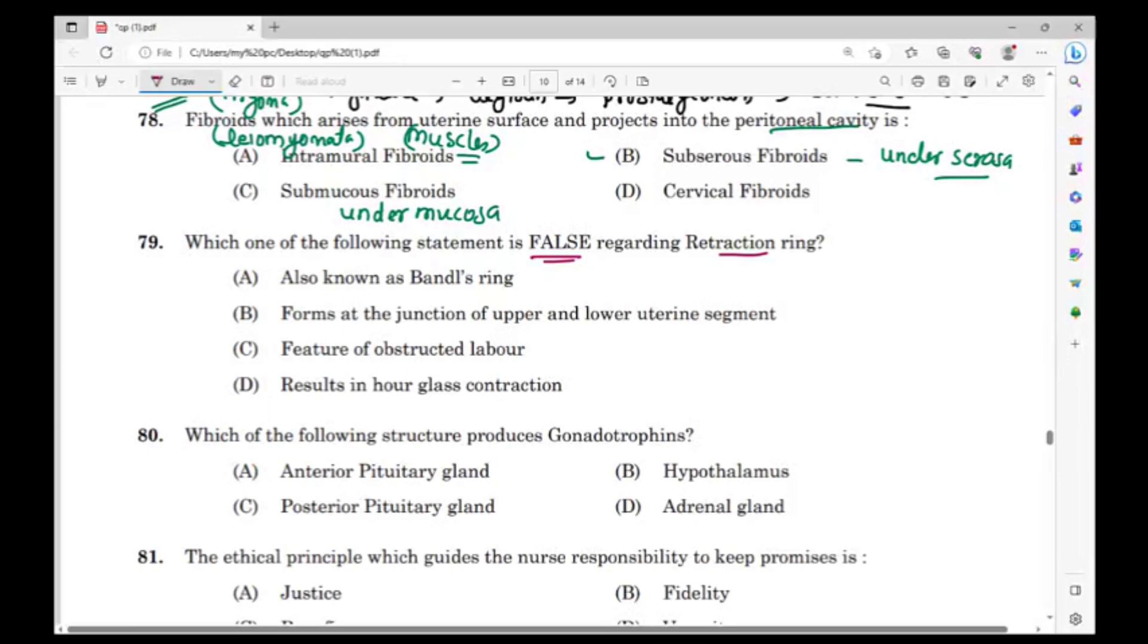Option D is the correct answer. Option D, results in hourglass contraction - that is not correct. This is a pathological retraction ring. This is a late sign of obstructive labor. Obstructive labor, late sign of obstructive labor. There is an abnormal junction.